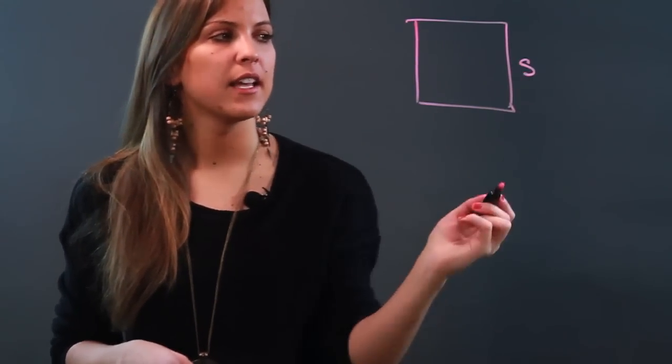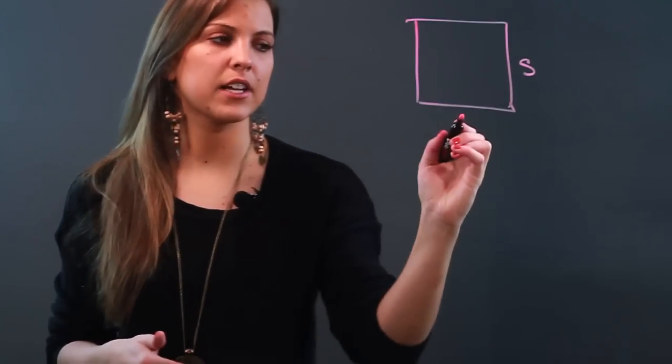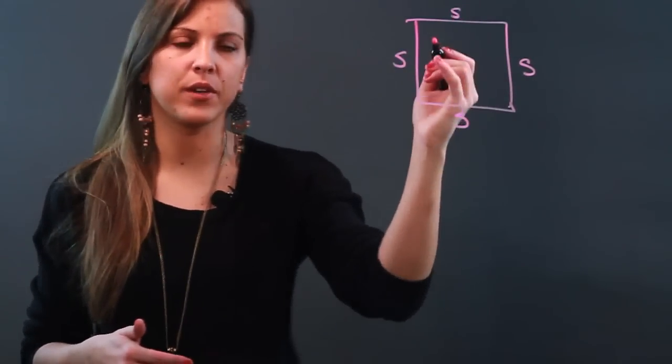The only time you can actually do this is if your shape is a square. If I have a square I'm going to label one of my sides S, and I can actually label them all S because in a square all the sides are equal.